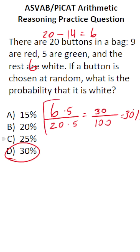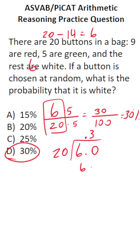Now, if you don't like solving it that way, you could take 6 over 20 and do the long division — read this as 6 divided by 20. 20 doesn't go into 6, so we have to add a decimal and a zero placeholder, and bring our decimal into our answer. 20 times 3 is exactly 60 with no remainder. So regardless of how you do it, you get the same answer: your probability of drawing a white button at random from the bag is 30%.